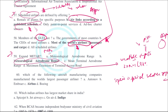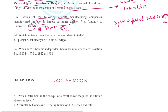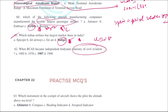Airbus is the largest aircraft manufacturing company and the largest passenger aircraft manufacturer. IndiGo has the largest market share among Indian airlines. BCAS became an independent body under the Ministry of Civil Aviation in 1987.